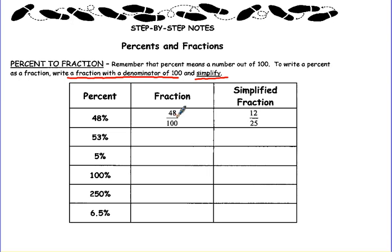48% is 48 out of 100. Simplified is 12 over 25. You divide it by 4 on the numerator and the denominator.